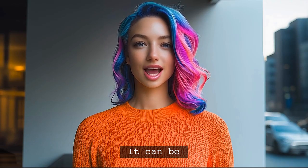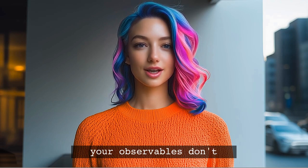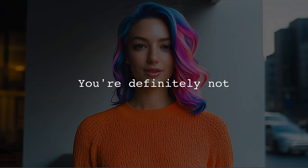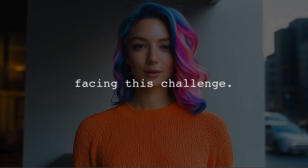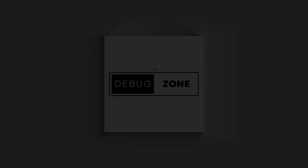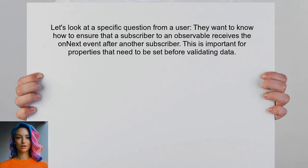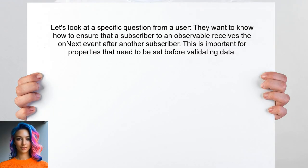It can be incredibly frustrating when your observables don't behave as expected, especially when the order of events is crucial for your application. Let's look at a specific question from a user. They want to know how to ensure that a subscriber to an observable receives the OnNext event after another subscriber.